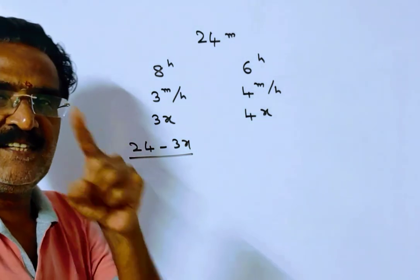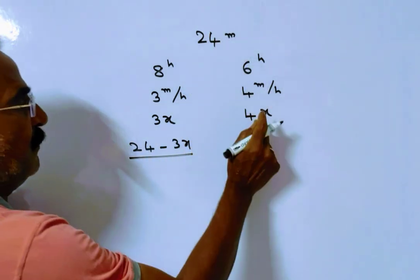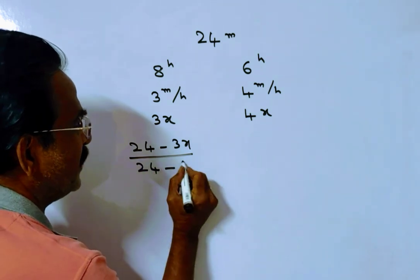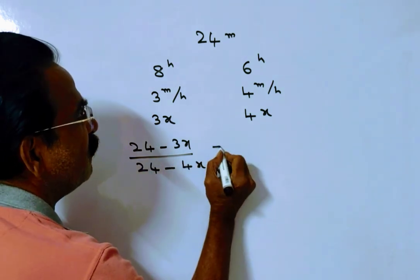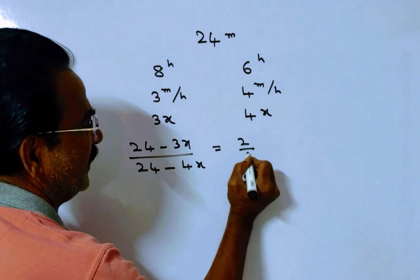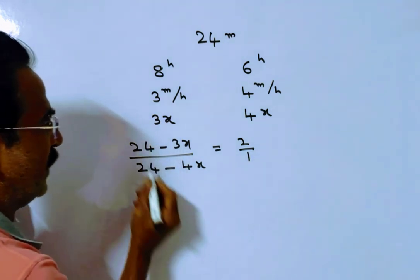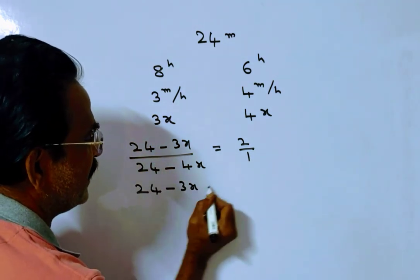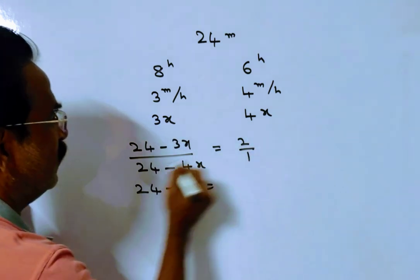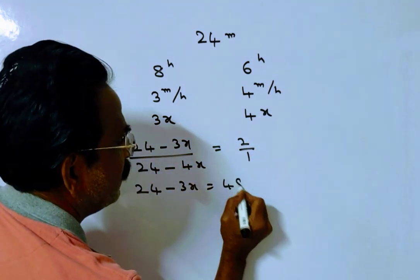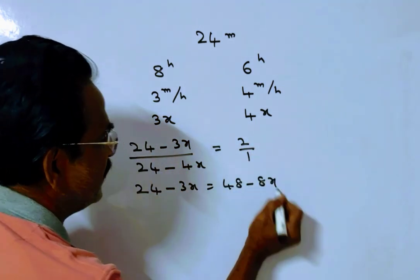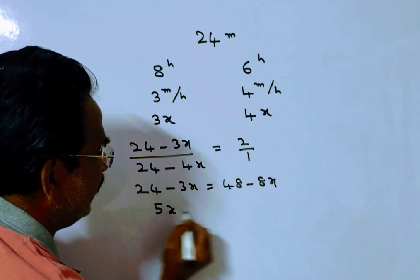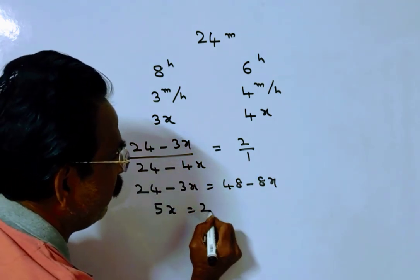The remaining height of the second candle is 24 minus 4x. This ratio is given as 2 is to 1. So: 24 minus 3x divided by 24 minus 4x equals 2 to 1, which implies 24 minus 3x equals 48 minus 8x, giving us 5x equals 24.